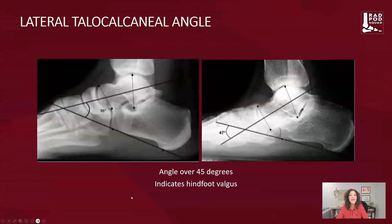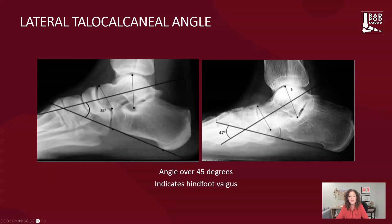The lateral talocalcaneal angle is very useful in pes planus on the lateral projection because the calcaneus is moving away from us, and we can see the vector will increase in a situation of pes planus as the talus begins to declinate. We have our bisecting vector drawing our line from the calcaneus up to the cuboid, and we see this angle widening in pes planus.